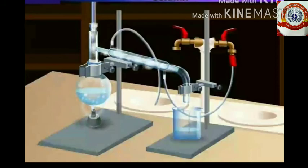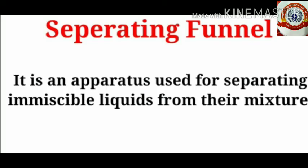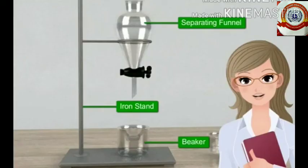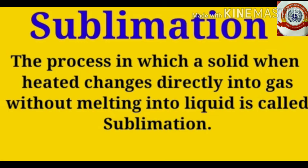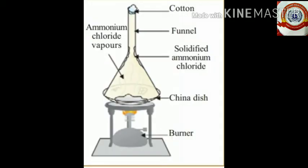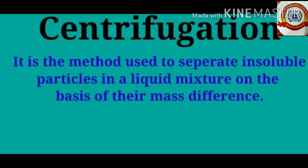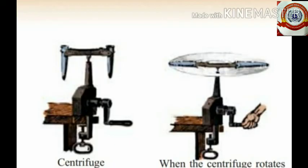Next, we discussed about the separating funnel, which is an apparatus used for separating immiscible liquids from their mixture. Then sublimation as a separation method: a solid when heated changes directly into gas without melting into liquid — this can be used to separate components that have the property of sublimation. After that, we discussed about centrifugation, a method for separating components from a mixture based on the difference in the mass of particles. Examples include separating butter from curd and separating blood cells from blood samples.